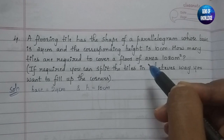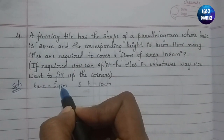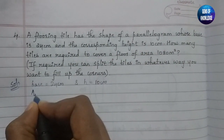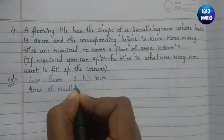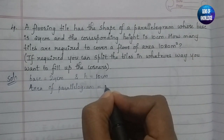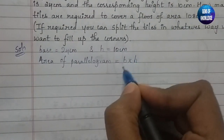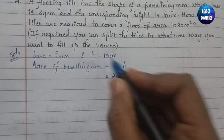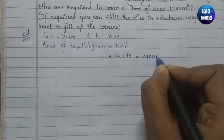How many tiles are required to cover a floor of area 1080 metre square? Note that both base and height are given in centimetres. So first let us find the area of the parallelogram. The formula is base into height. Substituting, base is 24 cm and height is 10 cm, giving us 240 cm square.